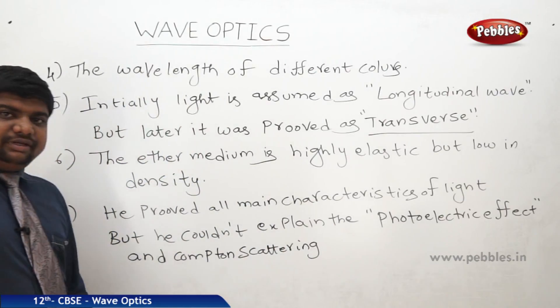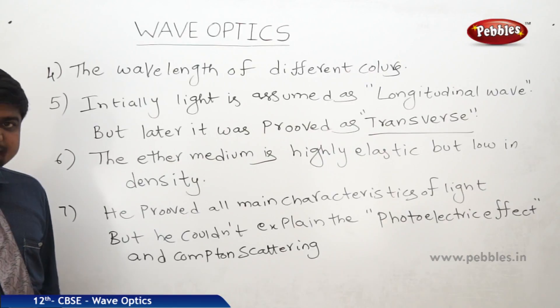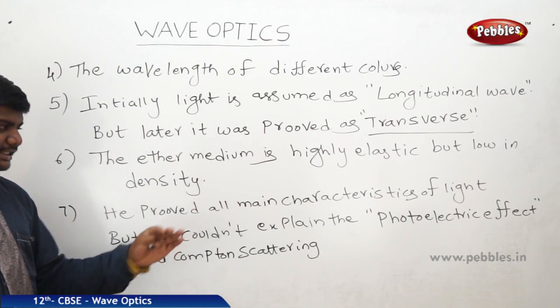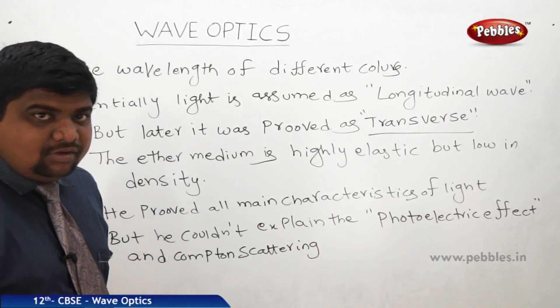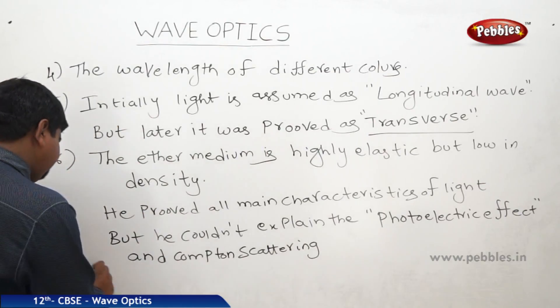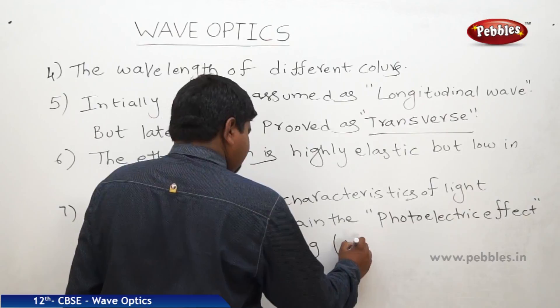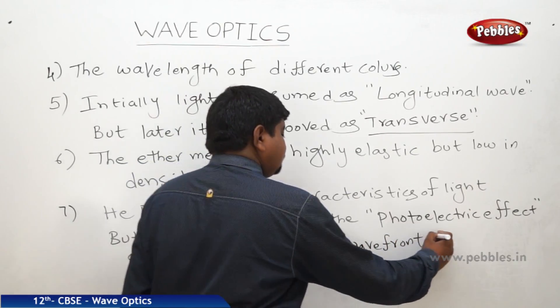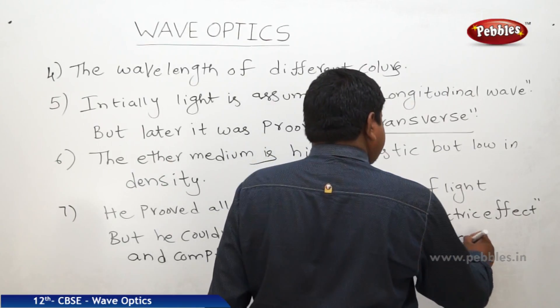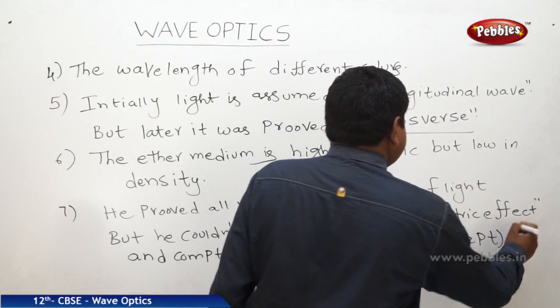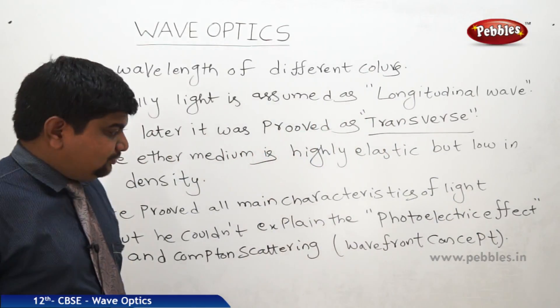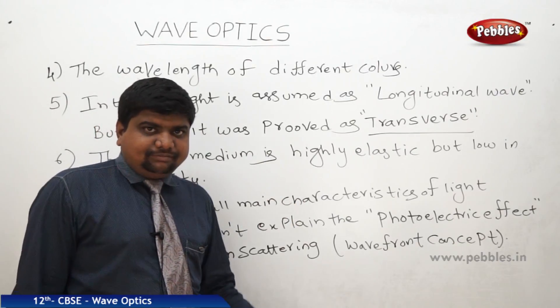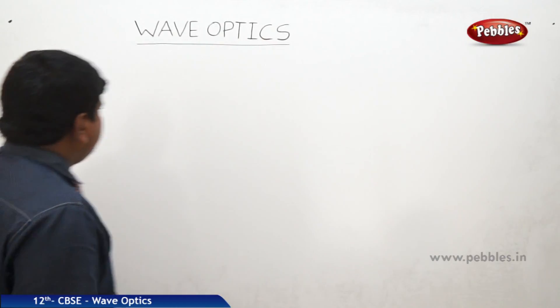This is very important one to understand. And one more, the wave theory of Huygens was started with a concept called wave front. Wave front. So it is a wave front concept. So what is the wave front? How it forms? What are the characteristics of the wave front? We will see. So what is wave front?